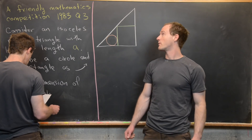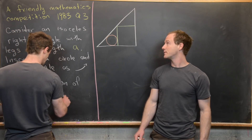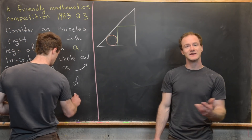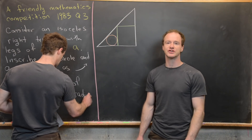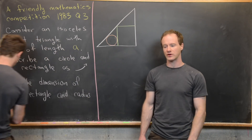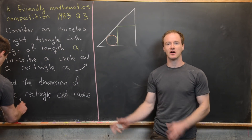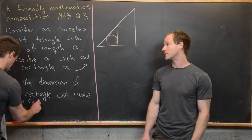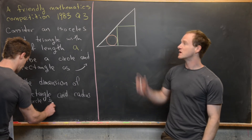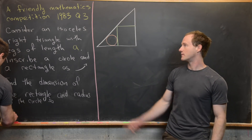Here we're looking at a problem from the Friendly Mathematics Competition. This is from the 1983 edition, Question 3. This is a math competition held between colleges in Indiana. So let's look at the statement of the problem.